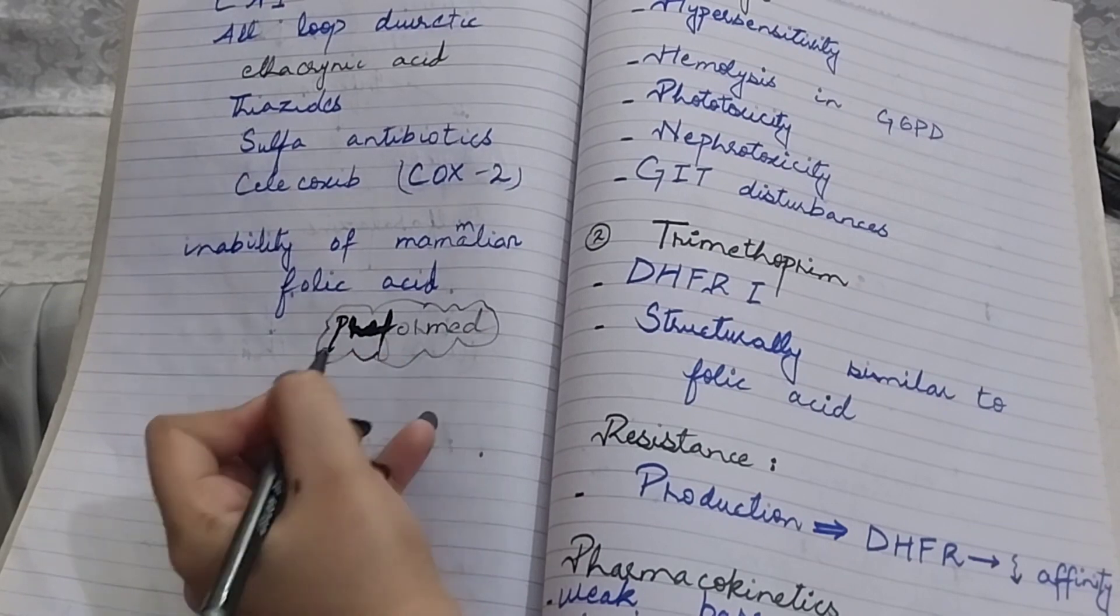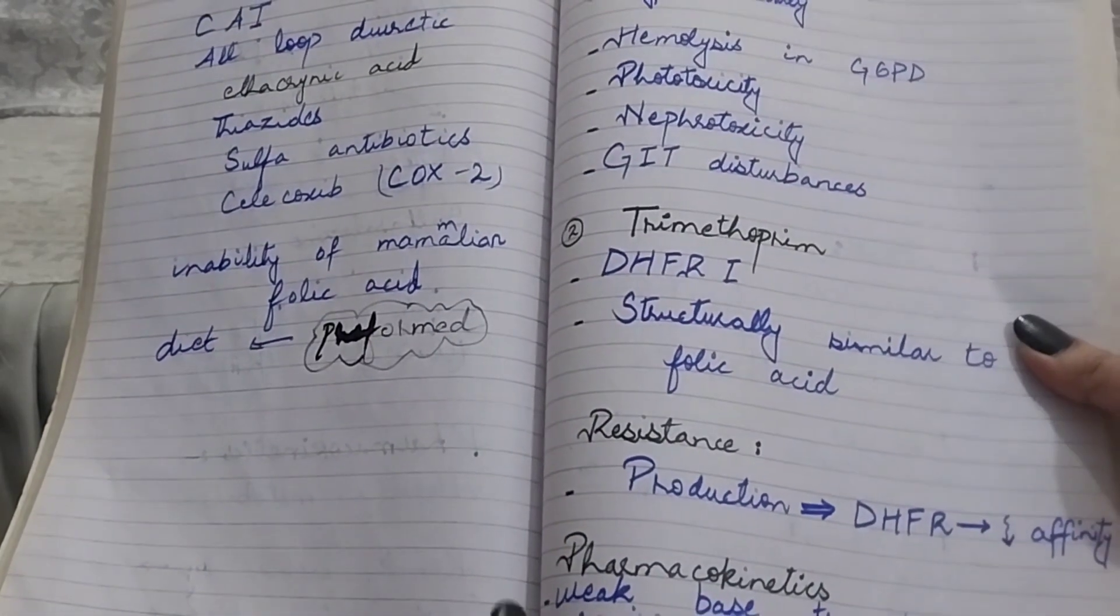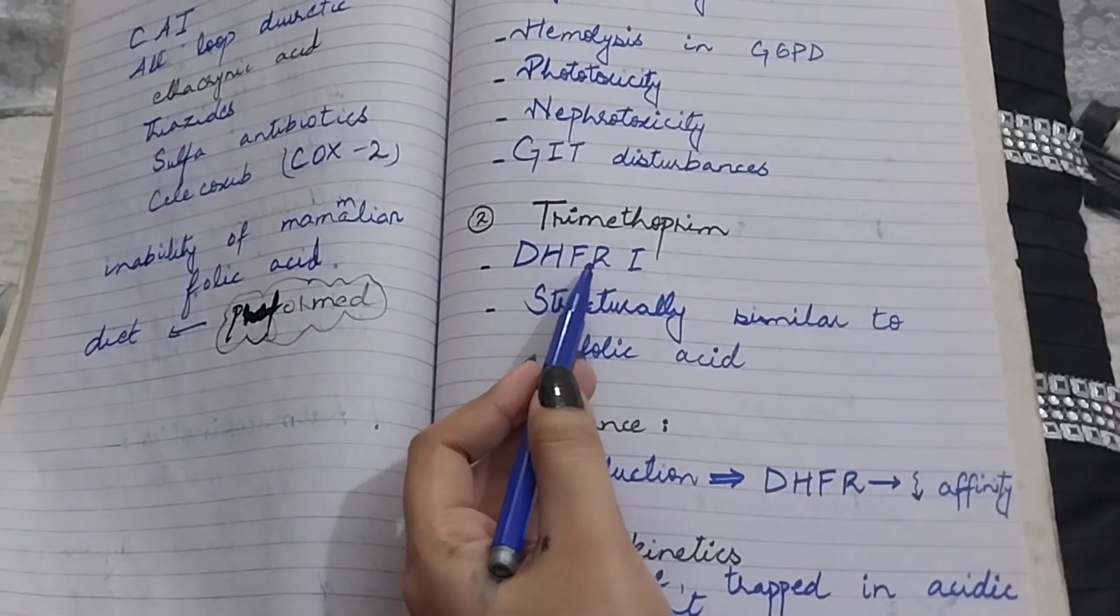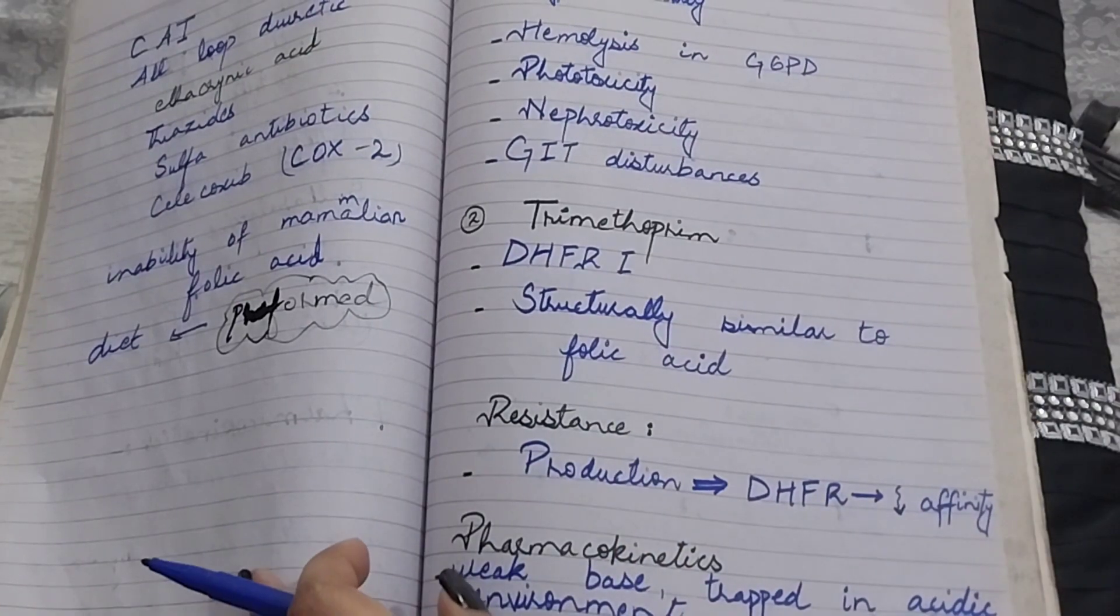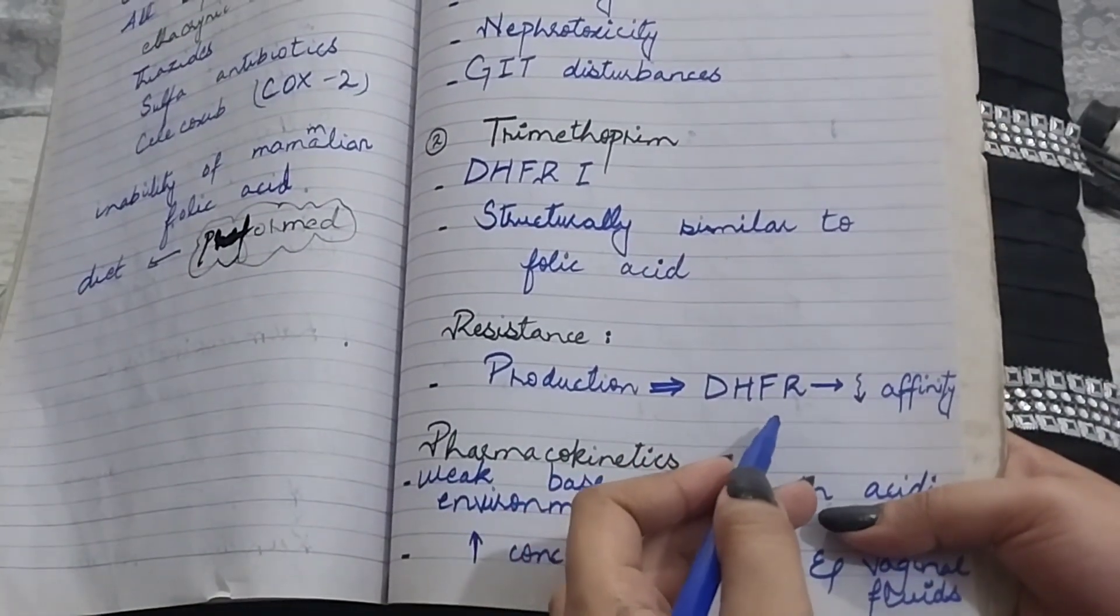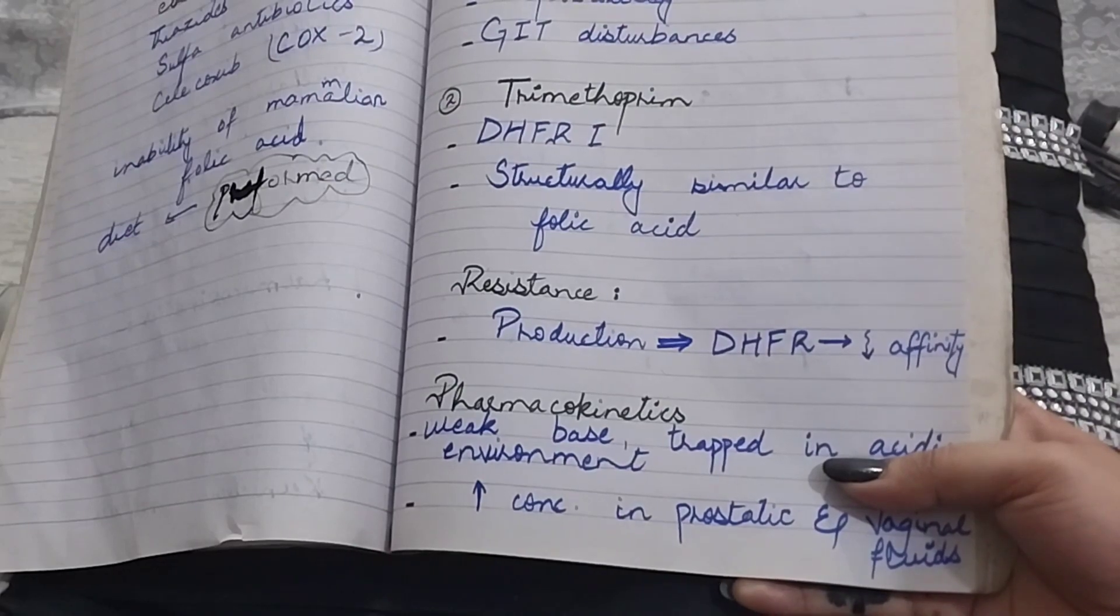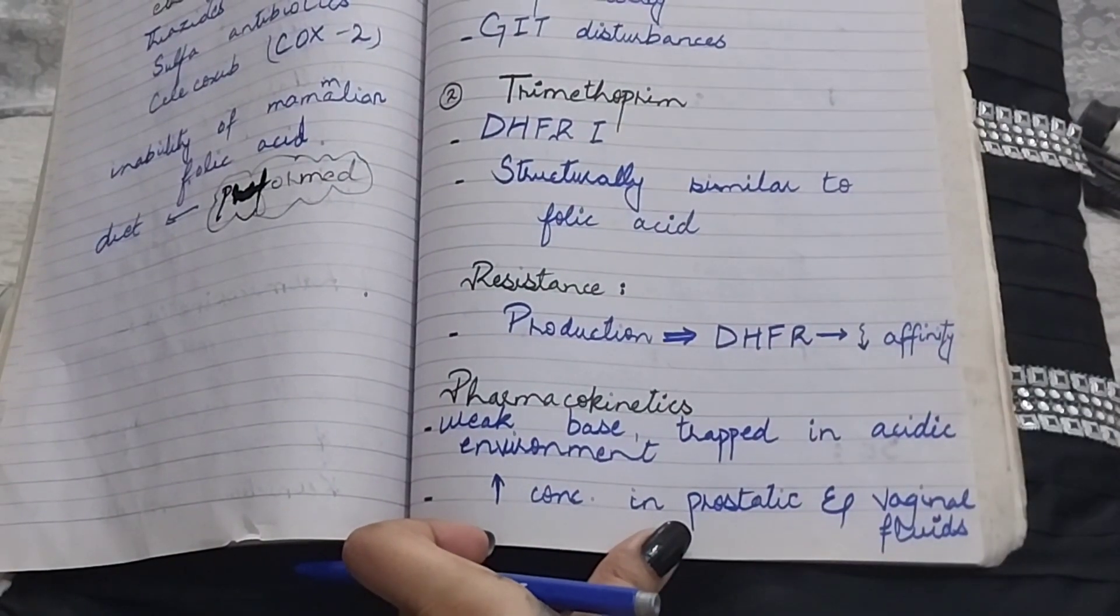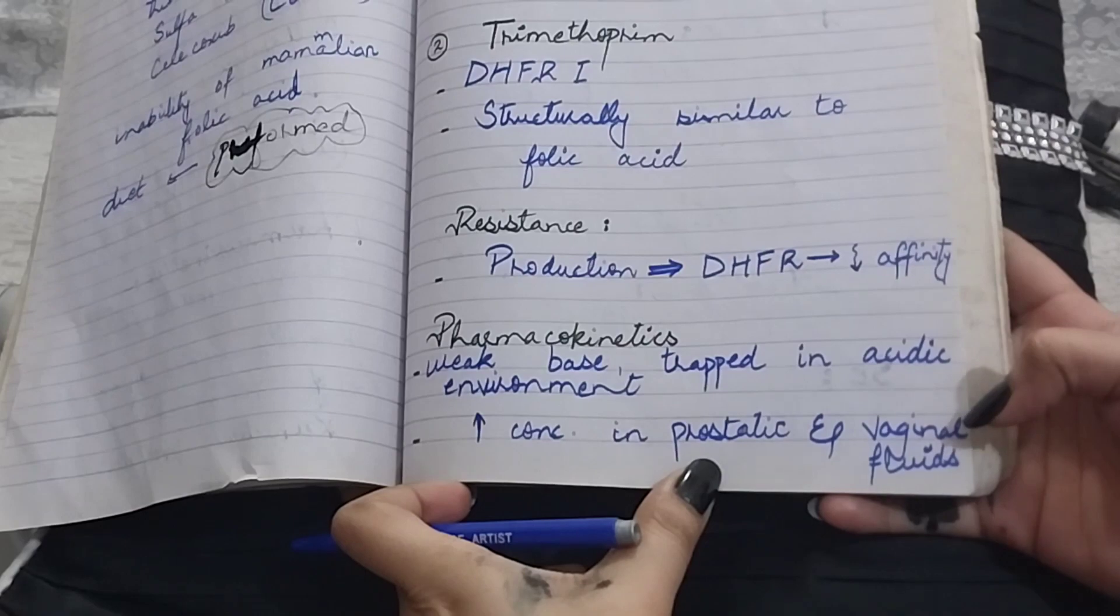Next we have trimethoprim, which is our dihydrofolate reductase inhibitor. We have already discussed this mechanism. They are structurally similar to folic acid. The resistance of trimethoprim is because of production of dihydrofolate reductase that has a low affinity for the drug. The pharmacokinetics of trimethoprim is that it is a weak base, so it's trapped in acidic environment and they reach high concentration in prostatic fluid and vaginal fluid.